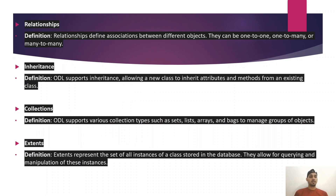Relationships define associations between different objects; they can be one-to-one, one-to-many, or many-to-many. ODL supports inheritance, allowing a new class to inherit attributes and methods from an existing class. ODL also supports various collection types such as sets, lists, arrays, and bags to manage groups of objects.